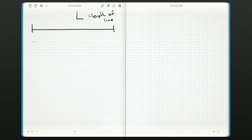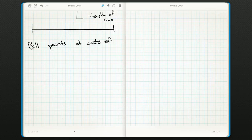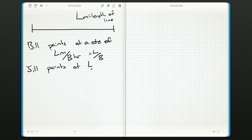That means Bill paints at a rate... Well, he could do this whole thing in B hours. So let's say this is L meters, L meters per B hours, L over B. And that means Jill paints at a rate of L over J. So that would be meters per hour.